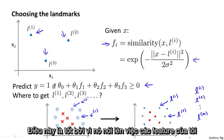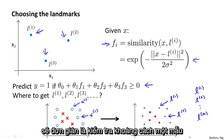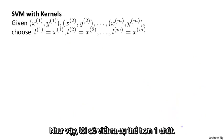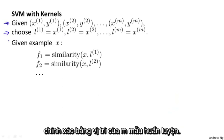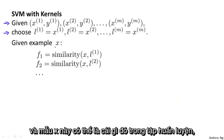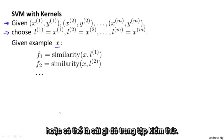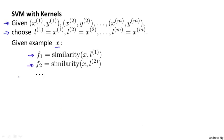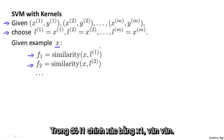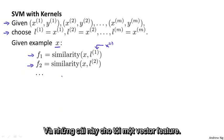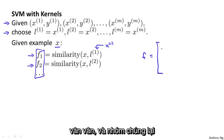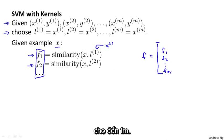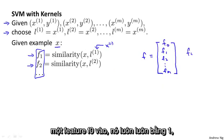This is nice because it means my features are basically going to measure how close an example is to one of the things I saw in my training set. Given m training examples, I choose the landmark locations to be exactly the locations of my m training examples. When given an example x — which can be from the training set, cross-validation set, or test set — I compute features f1, f2, and so on, where l1 equals x1, and so on. These give me a feature vector f. I group f1, f2, down to fm into a feature vector, and by convention we can add an extra feature f0 which is always equal to 1.